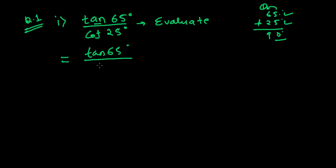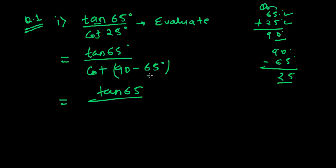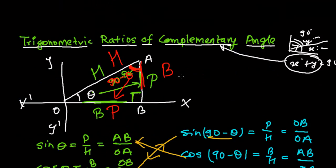And this cot 25°, I'm writing it differently. Cot 25° is also equal to cot(90° - 65°), because if you subtract 65 from 90 degrees, you'll get 25. So I'm writing tan 65° and cot(90° - 65°). Just imagine this is θ angle and see our expression here.